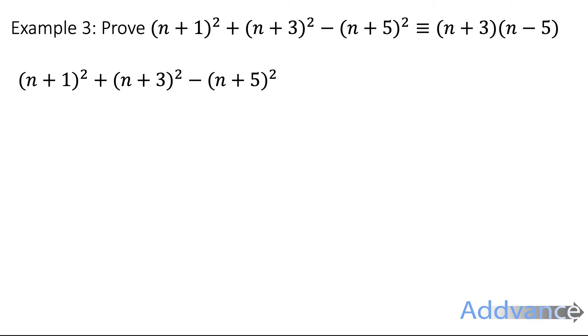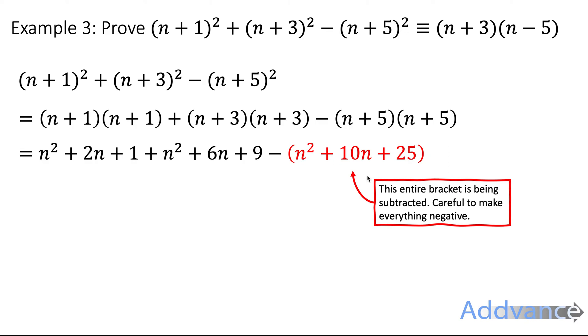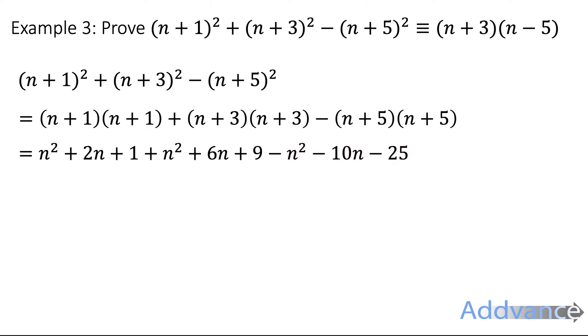So we're going to start by simplifying the more complicated side and hopefully get the simpler side out of that. So we take that side and we expand the brackets like this. And when we expand the brackets properly, we get n squared plus 2n plus 1, n squared plus 6n plus 9, and then the final bracket, we expand like that. This entire thing is being subtracted, so we have to be careful here that we subtract everything.